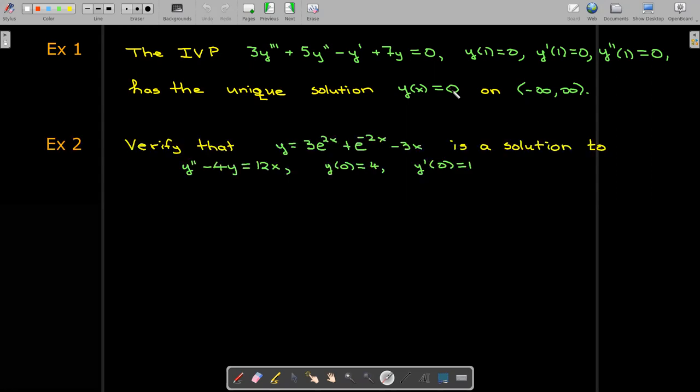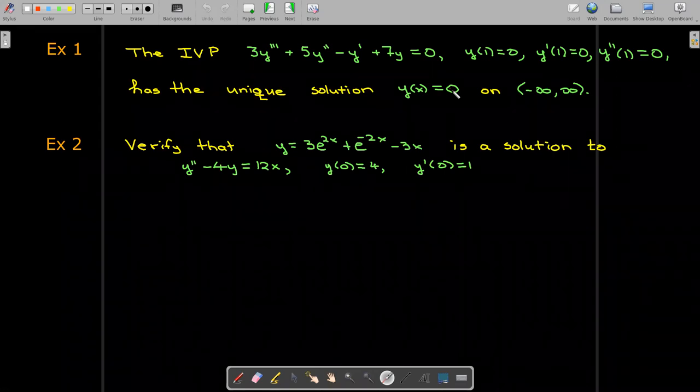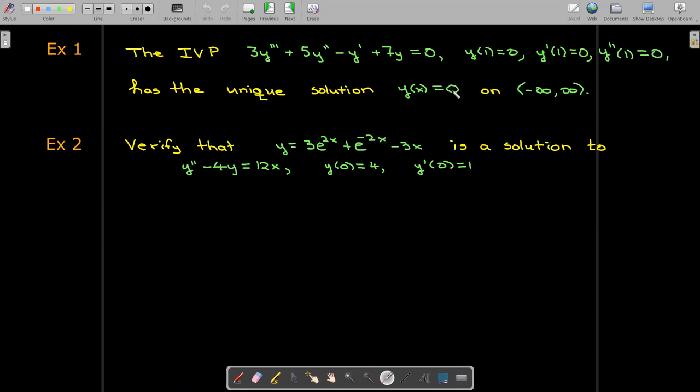So here we're asked to verify that 3e^(2x) + e^(-2x) - 3x is a solution to the initial value problem y'' - 4y = 12x with the initial conditions that y(0) = 4 and y'(0) = 1. So we're just going to verify it.